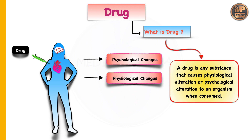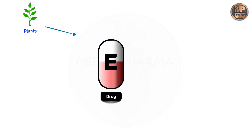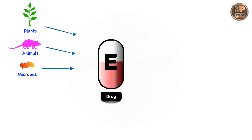Now we'll discuss about various sources of drug. Think about where we can get drugs from and try to match your guesses with mine. First, we can get it from plant sources — like tulsi leaf. The second source is animal source, from animals we can get antibodies. Then we can get it from microorganisms, like antibiotics.